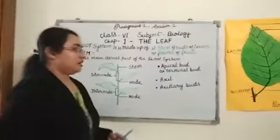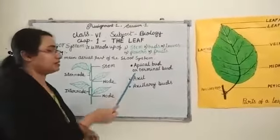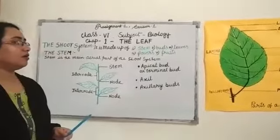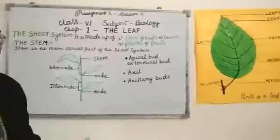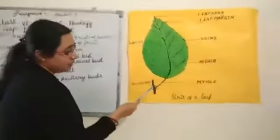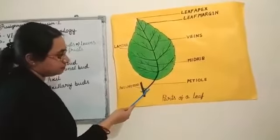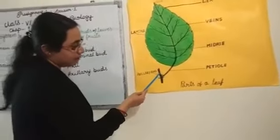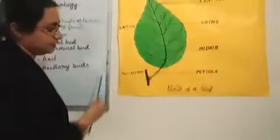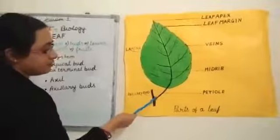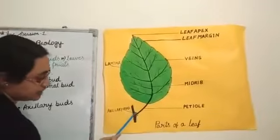Apical bud or terminal bud. The tip of the shoot has buds called terminal buds or apical buds; they are responsible for the vertical growth of the stem. The angle between the upper side of the leaf and the stem is called the axil. The buds found there are called axillary buds.